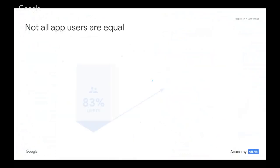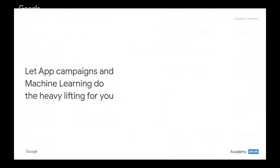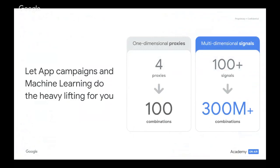In addition to understanding the benefits of app campaigns, it's key to note that the 20-80% rule can apply in the world of app advertising as well. About 20% of your potential users could contribute to more than 80% of your revenue, while about 80% of users contribute to less than 20% of your app's revenue. Instead of trying to figure that out manually, let app campaigns and machine learning do all the heavy lifting for you. With more than 100 signals and more than 300 million combinations of these signals, it is impossible for any individual advertiser to do the analytics work manually and also focus on the successful launch and optimization of app campaigns.